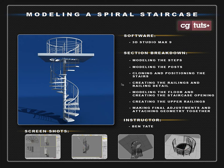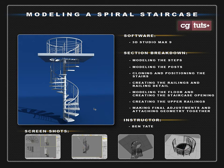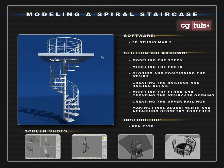Hey, this is Ben Tay for CGTuts and in this tutorial we're going to be modeling a modern style spiral staircase. Although this looks a little bit challenging, it's really not that complicated to model if you know a few tricks. The majority of this will be splines but we'll also use a little bit of poly modeling. I'll be using 3D Studio Max 9, and if you have that version or another version you shouldn't have any problems following this tutorial. We'll start by modeling one of the steps and one of the posts, then clone and position them into a spiral shape, move on to the railings and railing details, cut a hole in the floor so the staircase can pass through, do the top section railings, and finally make some adjustments and attach things together.